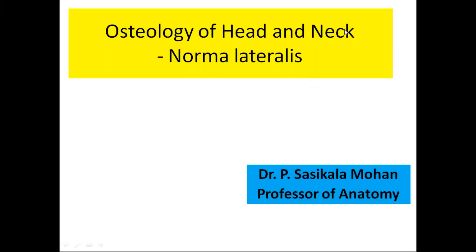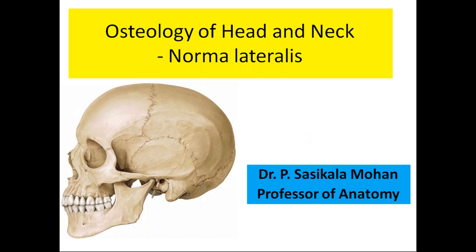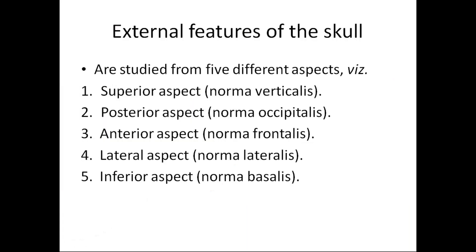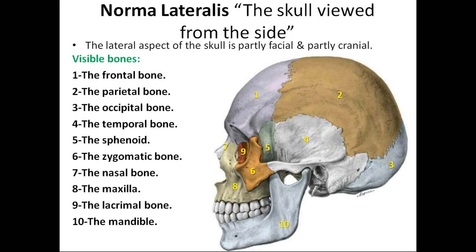This conference will now be recorded. We are going to see about the Norma lateralis. Viewing of the skull from the lateral side is called the Norma lateralis. Usually the external features of the skull are studied in five different aspects. We have already seen the Norma frontalis, and today we are going to learn about the Norma lateralis. The lateral part is formed partly by facial bones and partly by cranial bones: frontal, parietal, temporal, squamous part of temporal, occipital, sphenoid, zygomatic, lacrimal, nasal, maxilla, and mandible. All these bones contribute to the formation of the Norma lateralis.